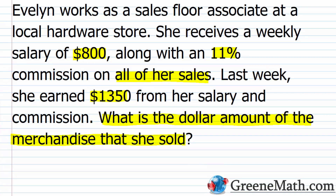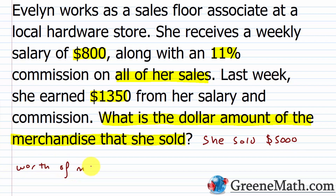She sold $5,000 worth of merchandise. To verify: she got a total of $1,350 from salary and commission. Her salary was $800, so subtract that to get $550 from commission. If she sold $5,000 worth of merchandise at an 11% commission, 5,000 times 0.11 equals 550 — confirming our answer is correct. She sold $5,000 worth of merchandise.